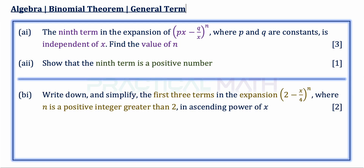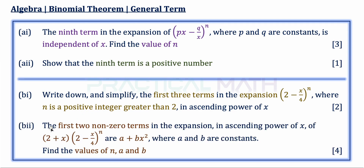In a separate Part B, for B Part 1, write down and simplify the first three terms in the expansion of (2 - x/4) to the power of n, where n is a positive integer greater than 2, in ascending powers of x — that's a 2-mark question. In B Part 2, the first two non-zero terms in the expansion of (2 + x)(2 - x/4)^n are a + bx², where a and b are constants. Find the values of n, a, and b — that's a 4-mark question. You might want to pause this video to give this question a try, and when you're ready, keep watching.